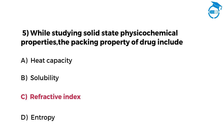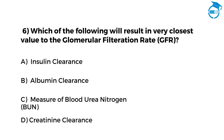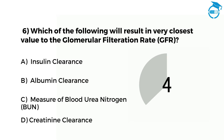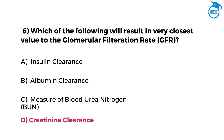Few more questions left. Let us move ahead and take the challenge. Which of the following will result in a value closest to the glomerular filtration rate? Option A insulin clearance, option B albumin clearance, option C measure of blood urea nitrogen, option D creatinine clearance. The right option is D, that is creatinine clearance.